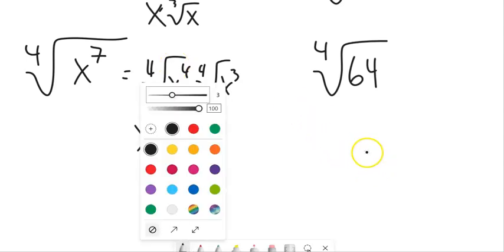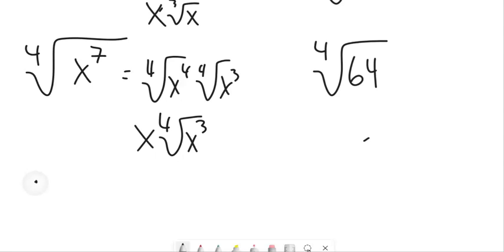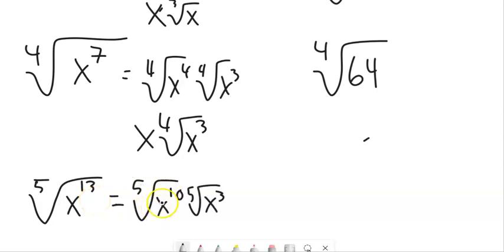You know, I'm going to throw another one in here. If I had like the fifth root of x, let's say to the 13th. Well, I want fives, right? So I'm going to take out an x to the 10th. And let's see, the fifth root of x to the 10th is x squared.